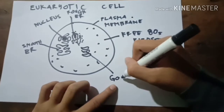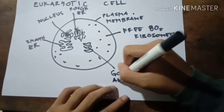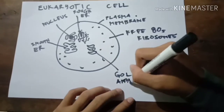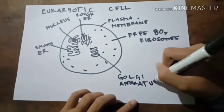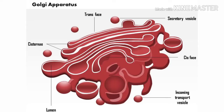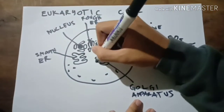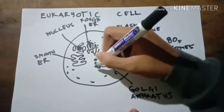Golgi, or Golgi apparatus. The job of the Golgi apparatus is to process and bundle macromolecules like proteins and lipids as they are synthesized within the cell. One of the components associated with the Golgi apparatus is the vesicles.